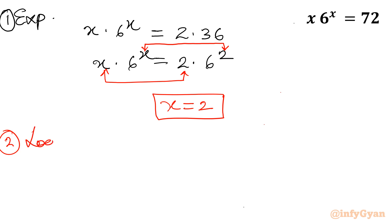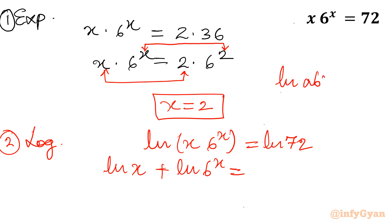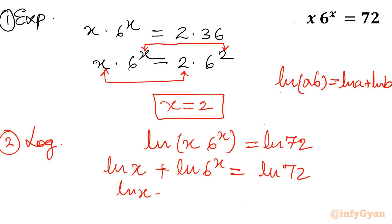Method 2 — logarithmic method using the Lambert W function. Take the natural log of both sides: ln(x·6^x) = ln(72). Using the property ln(ab) = ln(a) + ln(b), this becomes ln(x) + ln(6^x) = ln(72). Then using ln(6^x) = x·ln6, we get ln(x) + x·ln6 = ln(72).